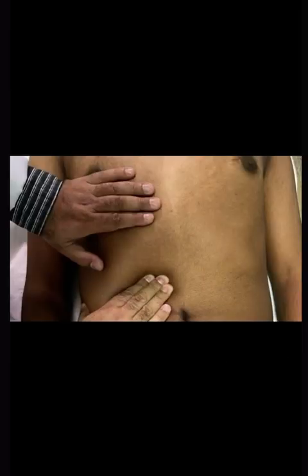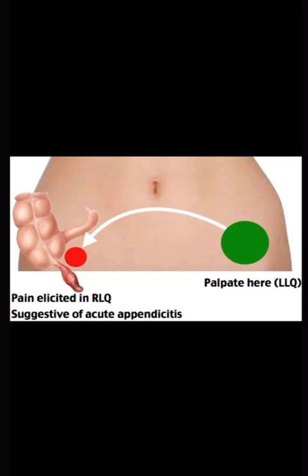Murphy's sign is elicited in patients with acute cholecystitis by asking the patient to take in and hold a deep breath while palpating the right subcostal area. Rovsing's sign: pain elicited in the right lower quadrant with palpation pressure in the left lower quadrant is a sign of acute appendicitis. Blumberg's sign, also referred to as rebound tenderness or Shetkin-Blumberg's sign, is a clinical sign in which there is pain upon removal of pressure rather than application of pressure to the abdomen. The psoas sign is assessed by having the patient lie supine, placing your hand just above the knee, and asking the patient to lift the right leg against resistance. Pain can indicate acute appendicitis.